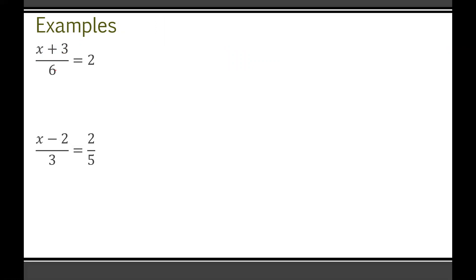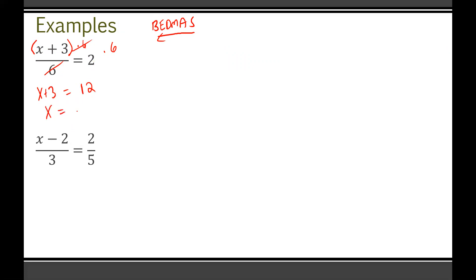For X plus 3 all over 6 equals 2: think of the numerator as being in brackets. The only thing besides the brackets affecting X is the divide by 6, so multiply both sides by 6. This leaves X plus 3 equals 12. Then minus 3 from both sides: X equals 9. You can verify: 9 plus 3 is 12, divided by 6 is 2. That checks out.